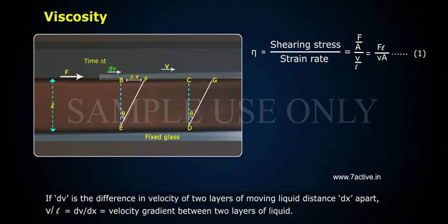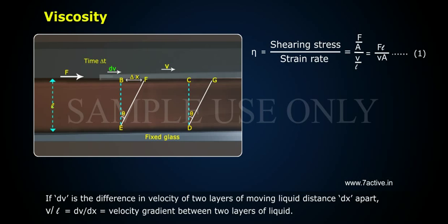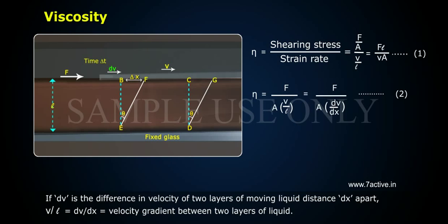If dv is the difference in velocity of two layers of moving liquid a distance dx apart, then v/l equals dv/dx, which is the velocity gradient between two layers of liquid. Now, eta equals (F/A) divided by (v/l), which equals (F/A) divided by (dv/dx). This is Equation 2.